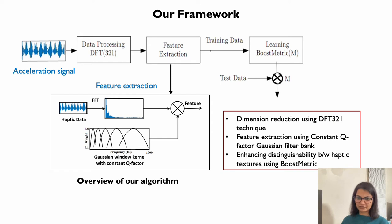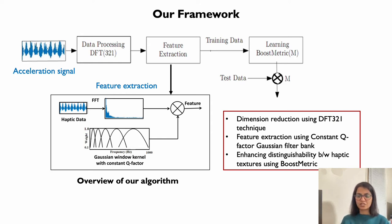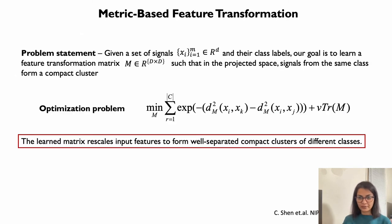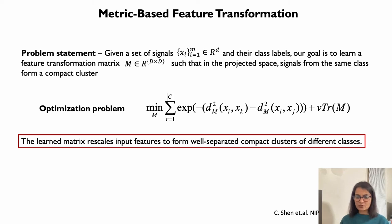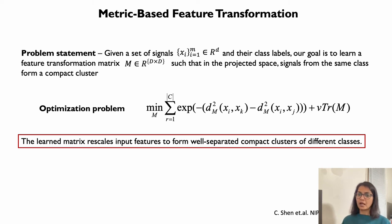We extract features from the single signal spectrum by dividing them into N bins using a Gaussian filter of varying bandwidth. We further improve the distinguishability of haptic signals by transforming the extracted features using a metric-based linear transformation technique called Boost Metric. Our goal is to learn a linear feature transformation matrix M such that in the projected space, signals from the same class form a compact cluster. The transformation matrix is obtained by solving an optimization function.